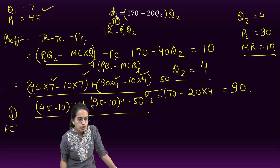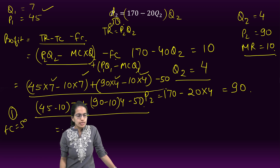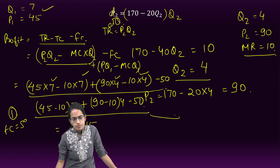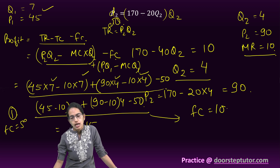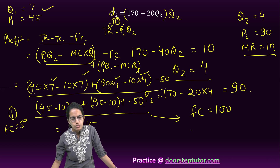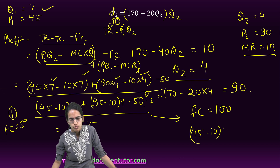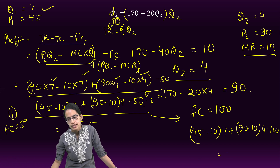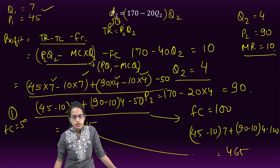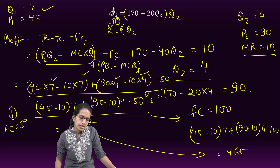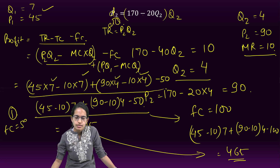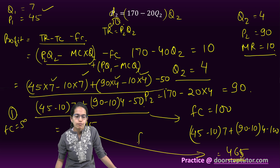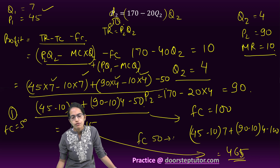When fixed cost is 50, profit = 515. In the second case when fixed cost increases to 100: (45 − 10) × 7 + (90 − 10) × 4 − 100 = 245 + 320 − 100 = 465. So profit drops from 515 to 465 when fixed cost increases from 50 to 100.